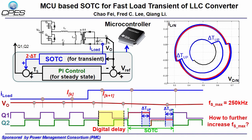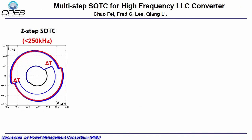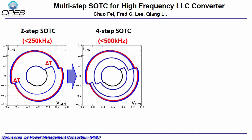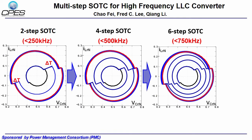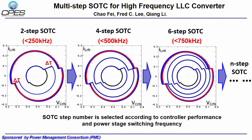The problem is how to further increase this maximum frequency limitation. Multi-step SOTC is proposed to achieve fast load transient response for high-frequency LLC converters. Two-step SOTC, which is the optimal pace to settle the resonant tank, can achieve a maximum switching frequency of 250 kHz. If we use four-step SOTC to settle the resonant tank, it is good for up to 500 kHz. Six-step SOTC is good for up to 750 kHz. We can select the number of steps based on the performance of the controller and the switching frequency of the power stage.